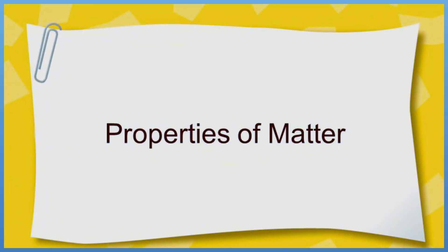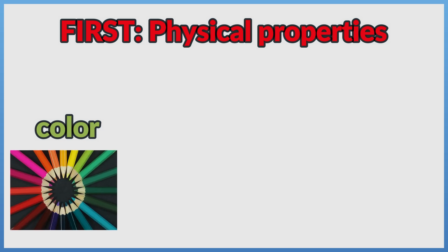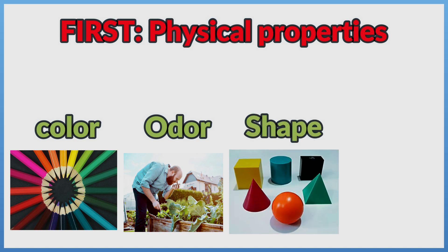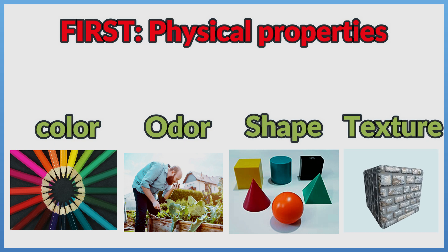Properties of matter: First, physical properties. Physical properties of matter are Color, Odor, Shape, Texture.